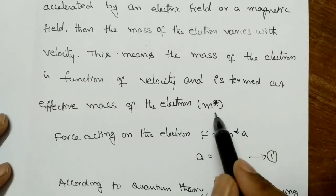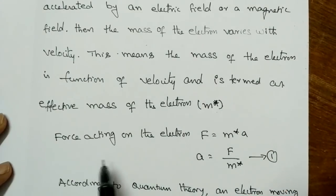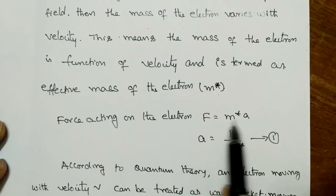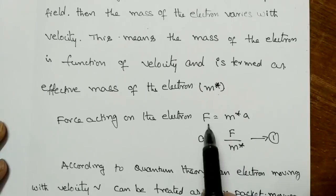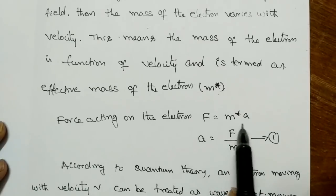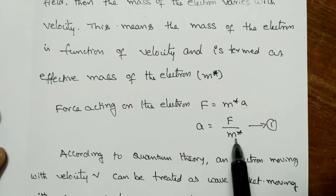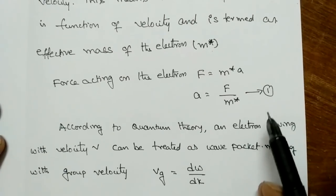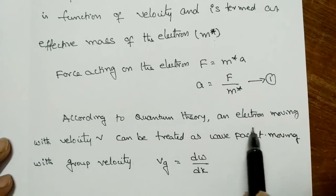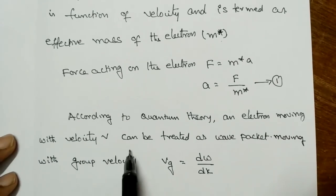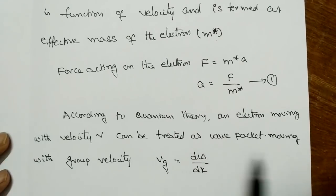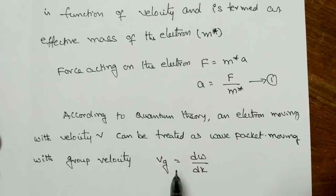The effective mass can be denoted as M star. The force acting on the electron is F = M* A. According to Newton's second law, F = MA, but here F = M* A, so A = F / M*. This is equation number 1. According to quantum theory, an electron moving with velocity V can be treated as a wave packet moving with a group velocity.